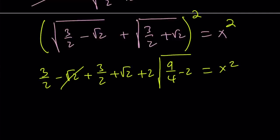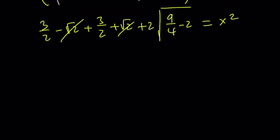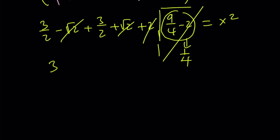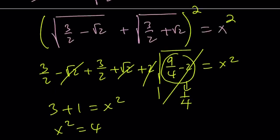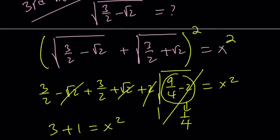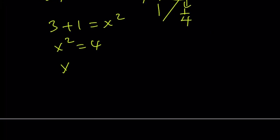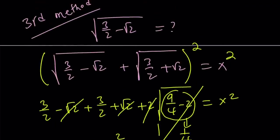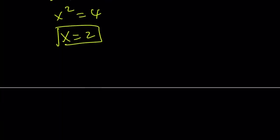The √2 terms cancel out. 3/2 plus 3/2 is 3. Then 9/4 minus 2 is 1/4, and √(1/4) is 1/2, so 2 times 1/2 equals 1. So we get 3 plus 1 equals x², meaning x² equals 4. Since x is a positive quantity, x must equal 2. Now I'm going to think about the minus version of the same expression.